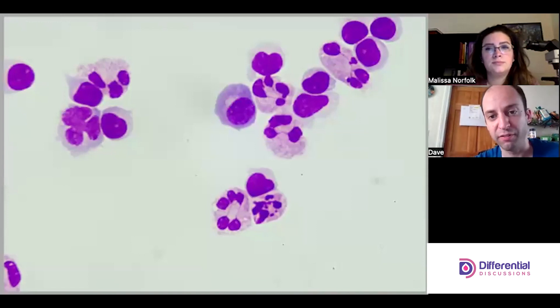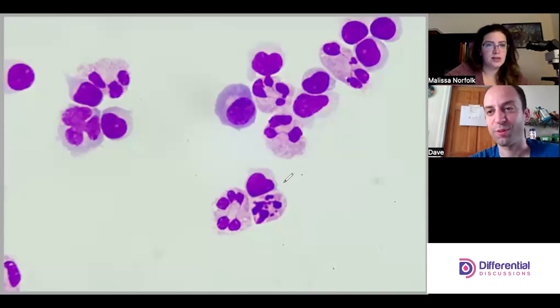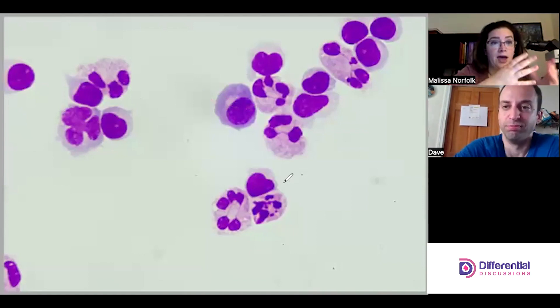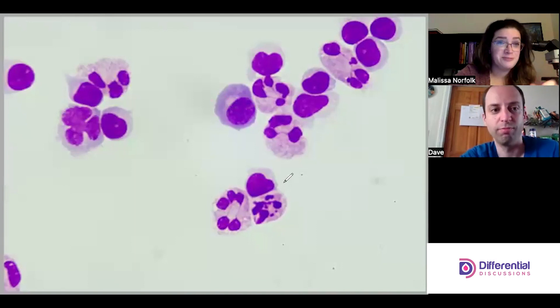Because of the really prominent perinuclear hoff, I would be comfortable saying that this is a plasma cell and not just a reactive lymph. The other thing about that blue - if we look at some of the other lymphs, like this fella down here, the cytoplasm is really, really light, barely noticeable. If this was a peripheral blood, this would probably be like neon blue, glow in the dark dark blue. It makes sense because plasma cells are trying to make immunoglobulin, so they're going to have active RNA and immunoglobulin that's really going to stain the cytoplasm of the plasma cells.